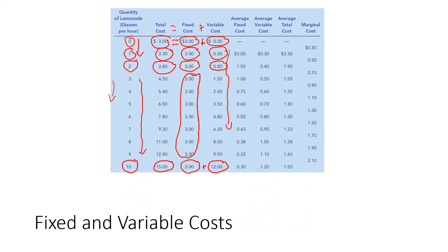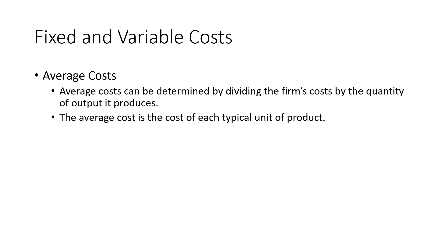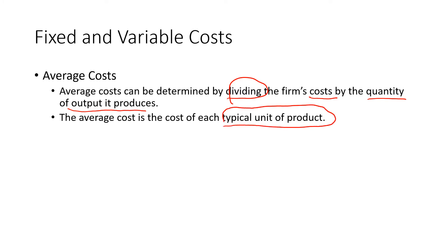Average cost is determined by dividing the firm's cost by the quantity of output produced. We calculate average cost for total cost, fixed cost, and variable cost. The average cost is essentially the cost per unit — for example, if producing 20 units, how much does each unit cost?